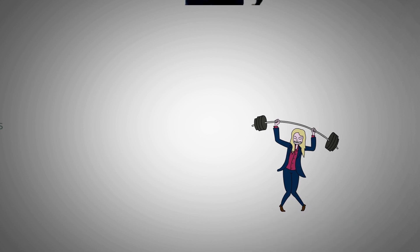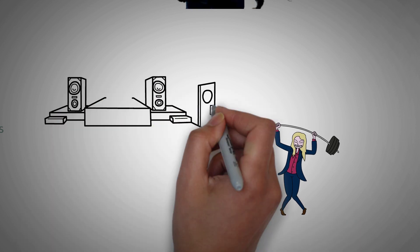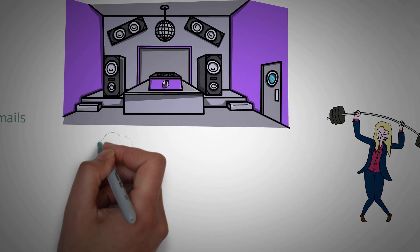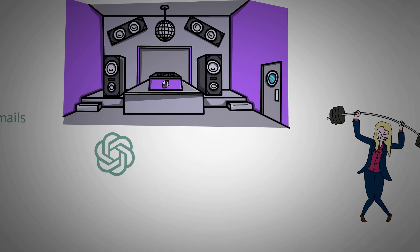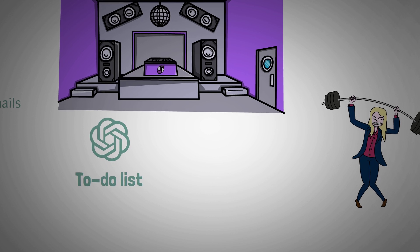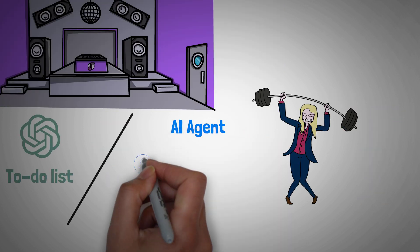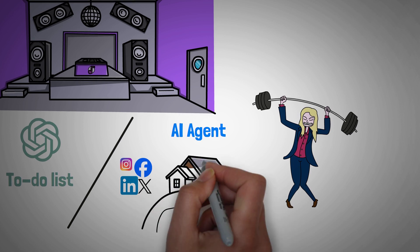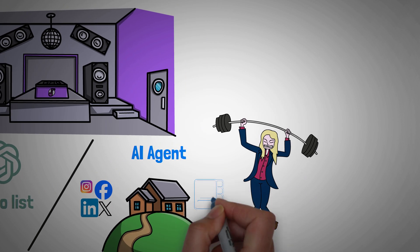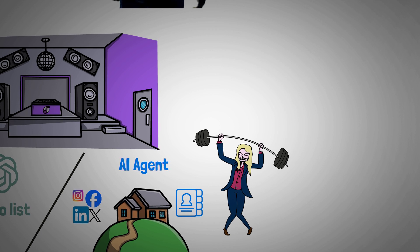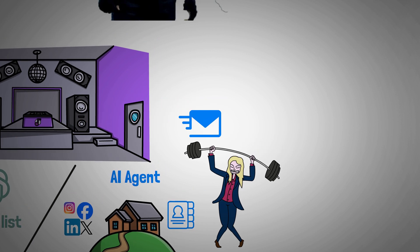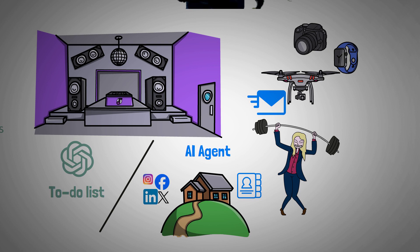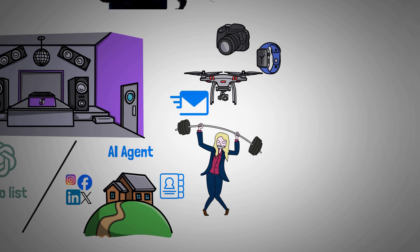For example, if you told an AI that you need to plan a surprise party for your best friend next month, a normal standalone chatbot would generate a generic to-do list response. An agent, however, may analyze your friend's social media to gauge their interests, check local venue availability, create a guest list based on your contacts, draft invitation messages, and suggest gift ideas based on recent online searches — all of this without you explicitly having to spell out each step.